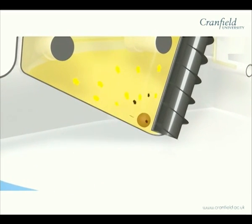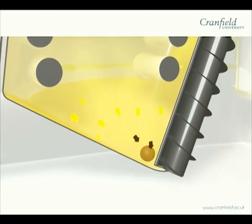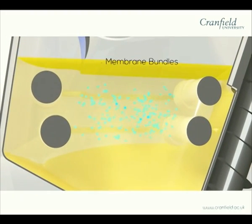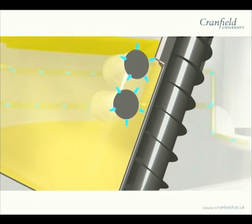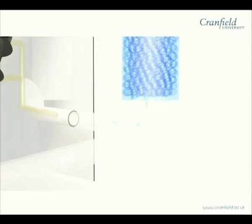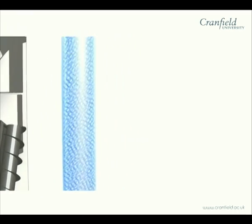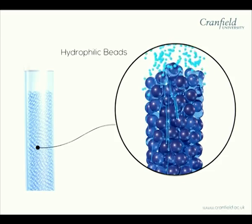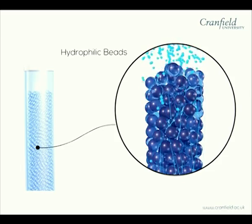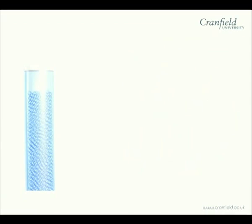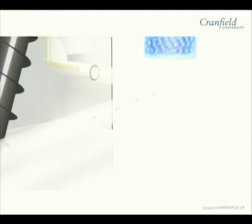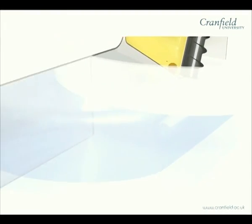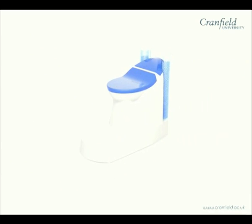The waste is now in the holding tank. The solids collect at the bottom while the liquid floats on top. Pure water in vapour form, without any pathogens, then passes into the membrane bundles, where it's driven along by a sweep gas. The vapour then enters the large columns at the back of the toilet, which contain nano-coated hydrophilic beads. As the vapour passes over the beads, it condenses. The pathogen-free water then drips down a collection pipe and drains into a water tank, which doubles as a step at the front of the toilet.